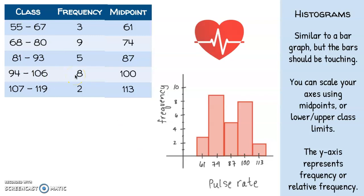So using our pulse rate data from the previous examples, I have my five classes here, and I could use these lower limits on my x-axis or even these upper limits on my x-axis, but I went ahead and chose to use the midpoints.